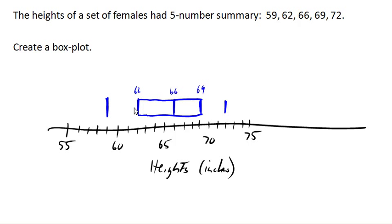And then we extend lines out from the box to the minimum and the maximum. Sometimes this is called a box and whiskers plot, because we have a box, and then we have these sort of whiskers coming out on either side, in this case going down to 59 and 72.